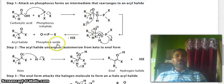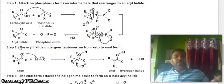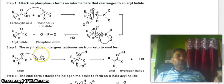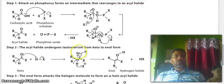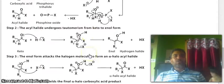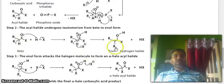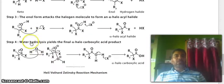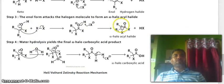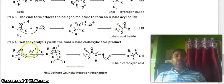Step 2, the acyl halide undergoes tautomerism to form keto to enol form. So, keto and this is the enol form. In step 3, enol form attacks the halogen molecule to form alpha-halo acyl halide. And in last step, water hydrolyzes the acyl halide to give the final alpha-halo carboxylic acid product.